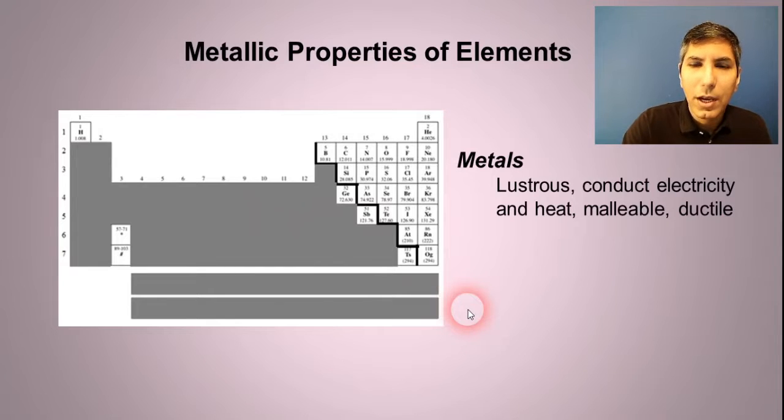And as you probably know, metals have a lustrous or a very shiny property to them. They are usually pretty good at conducting heat and electricity. They're malleable, which means that we can hammer them into a sheet like foil or something like that. They are ductile, which means that we can stretch them out into a wire if we want to.